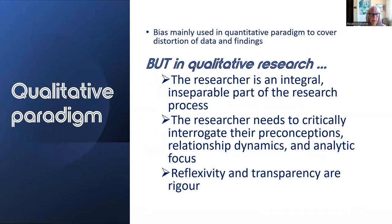Bias is often used as a term in social research to cover any form of influence that's felt to provide some form of distortion of research data and findings. Mainly it's used in the quantitative paradigm. In qualitative research the researcher is an integral part of the process and the final product. Separating the researcher out from this just isn't possible and also it's not desirable. The concern for qualitative research is whether the researcher has been critically self-reflective about their own preconceptions, relationship dynamics and analytic focus. Reflexivity and transparency are central to rigour in the qualitative paradigm.